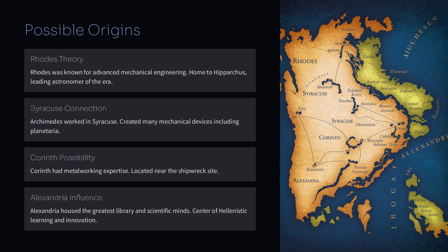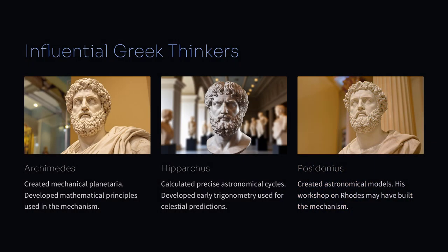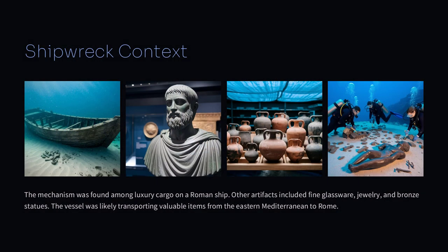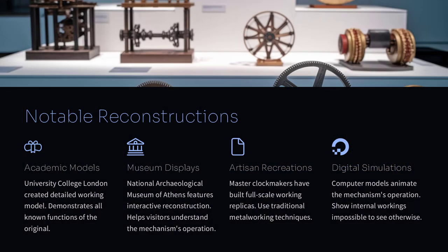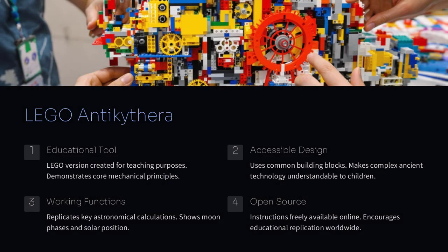For example, consider the way we use a calendar today. We know that the moon has phases that repeat in a cycle, and our calendars are designed around this natural rhythm. The Antikythera mechanism took that idea a step further by not only showing the cycle of the moon, but also predicting other astronomical events.